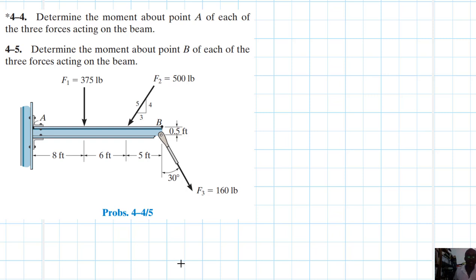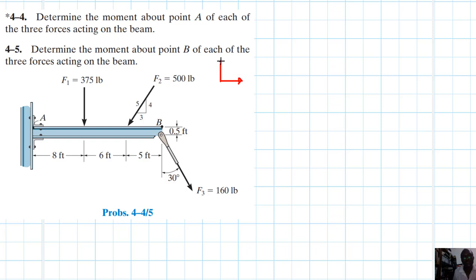We've been asked to determine the moment — this is fairly direct. The first thing we're going to do is write the components of each force, especially F2 and F3. We are using this coordinate system — let me use red here — so let's call this Y, and this X.